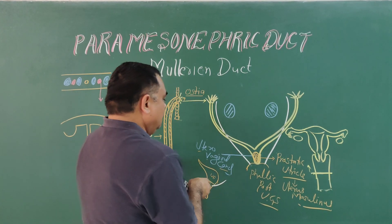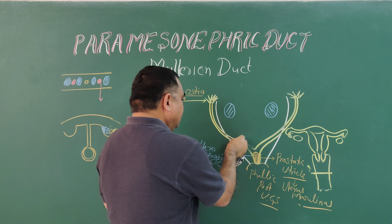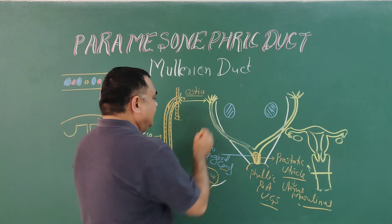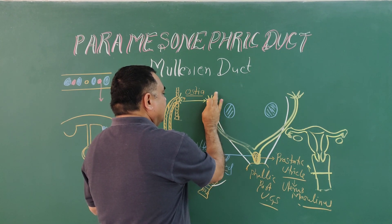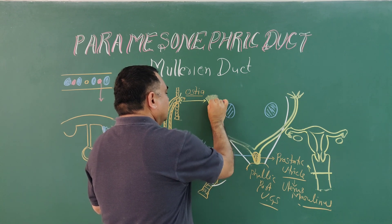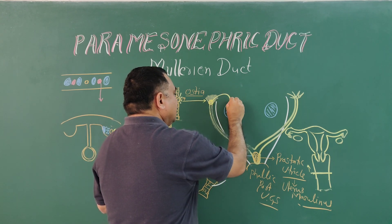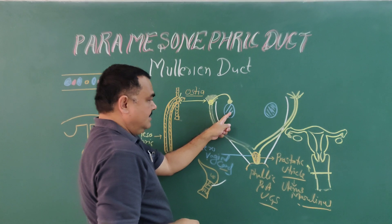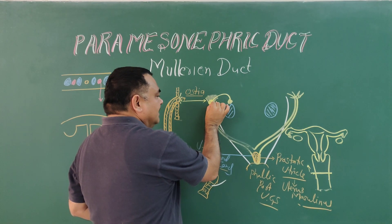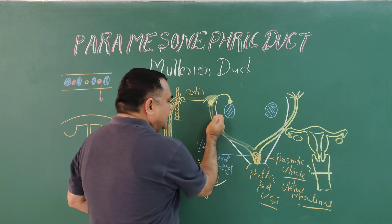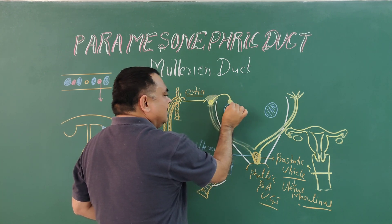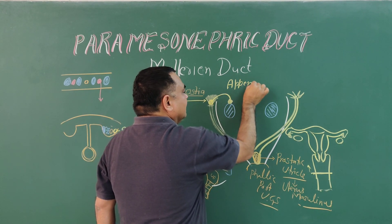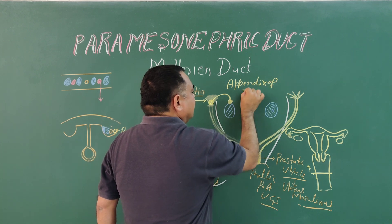From here to here this part disappears in the case of the male. The upper terminal part persists and forms the appendix of the testis in the case of the male, where the testis is present. The terminal part persists, the remaining part disappears, and it attaches to the testis forming the appendix of the testis.